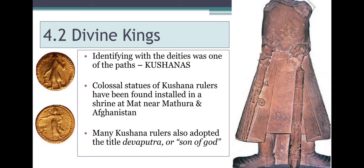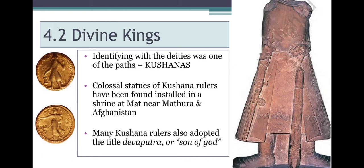Their notion of kingship — a key way they claimed higher status — was expressed through their coins and sculptures. They installed colossal statues, including one in Afghanistan. Some historians believe these mammoth statues were meant to portray the rulers as God-like figures, similar to the Bahubali movie reference where they created a huge face — these rulers were trying to claim they were God-like. That is why they adopted titles like Devaputra, which literally means Son of God, probably inspired by Chinese rulers who called themselves Sons of Heaven.